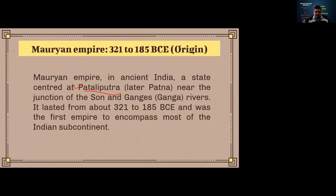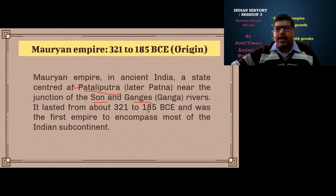The junctions around Patna or Patliputra are the areas where the Ganges and other rivers flow, and these rivers contributed to making this land very productive. The dynasty lasted from 321 to 185 BC and was the first empire to encompass most of the Indian subcontinent.